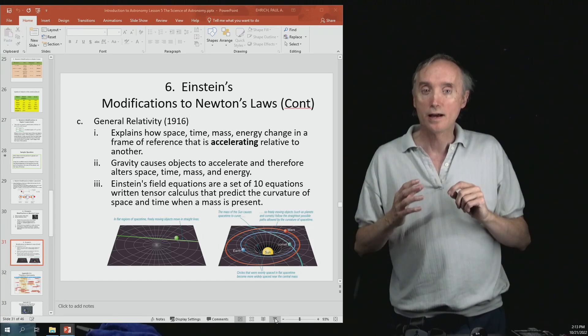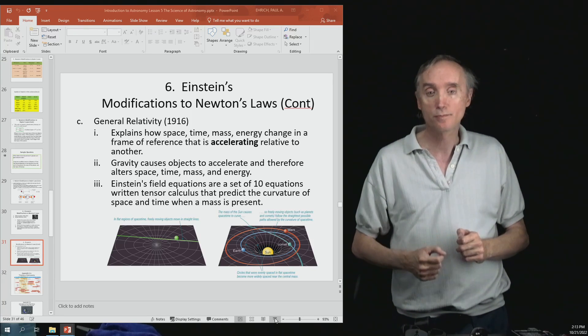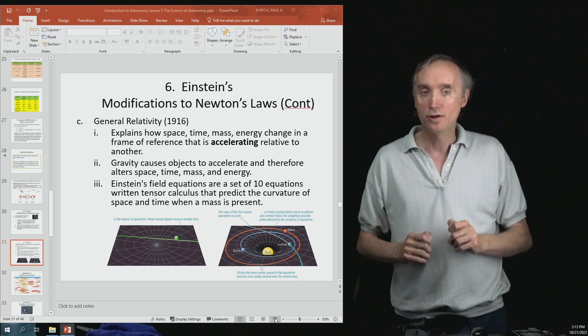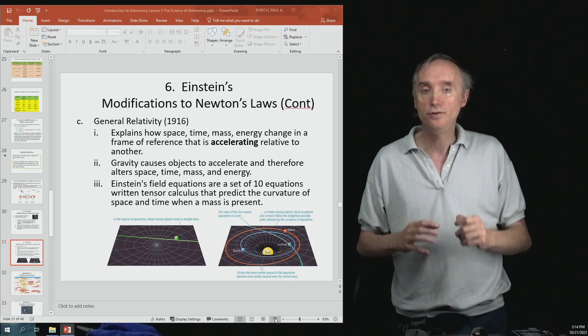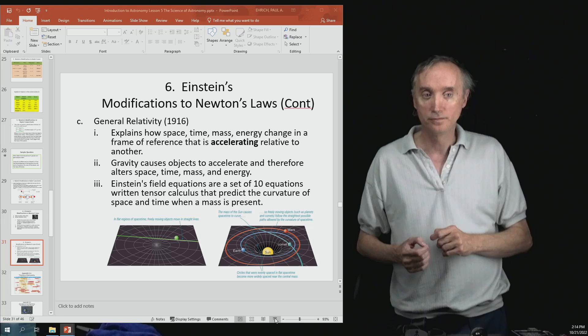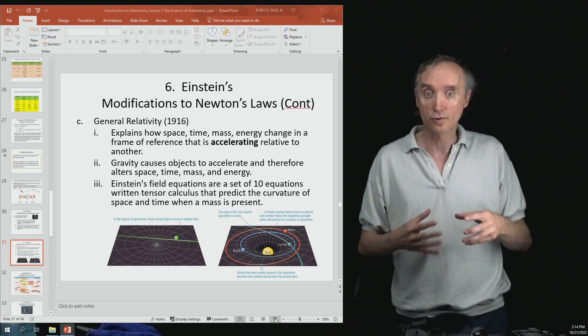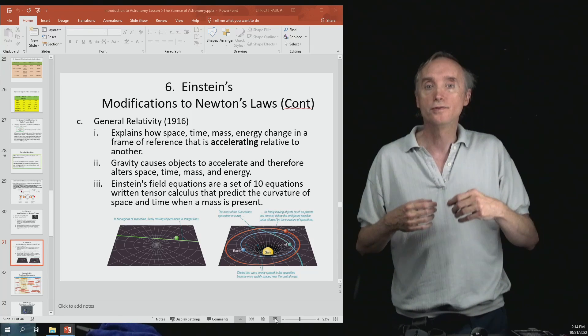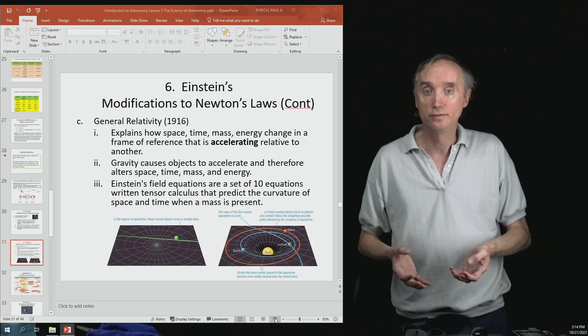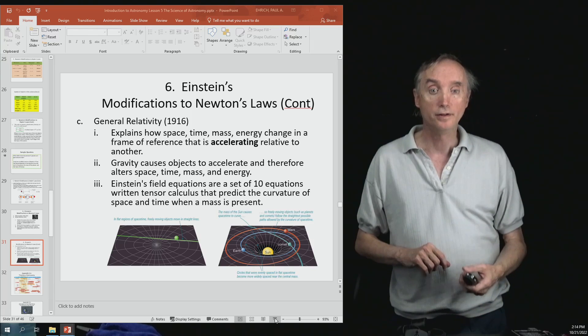Albert Einstein said that the mass of a star bends space and time around it, and then objects follow that curvature. Notice that Albert Einstein never uses the word "force" of gravity—that's Sir Isaac Newton. Newton would explain the orbit in terms of a force, a push or a pull on the object, whereas Albert Einstein would explain it in terms of a curvature of space and time. Pretty interesting stuff.